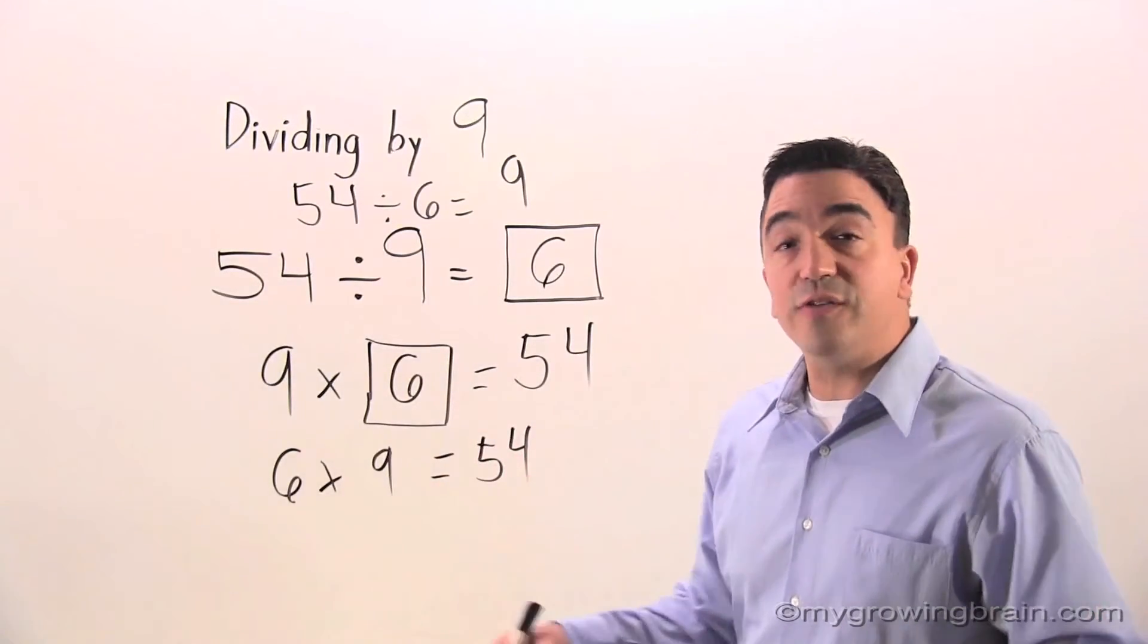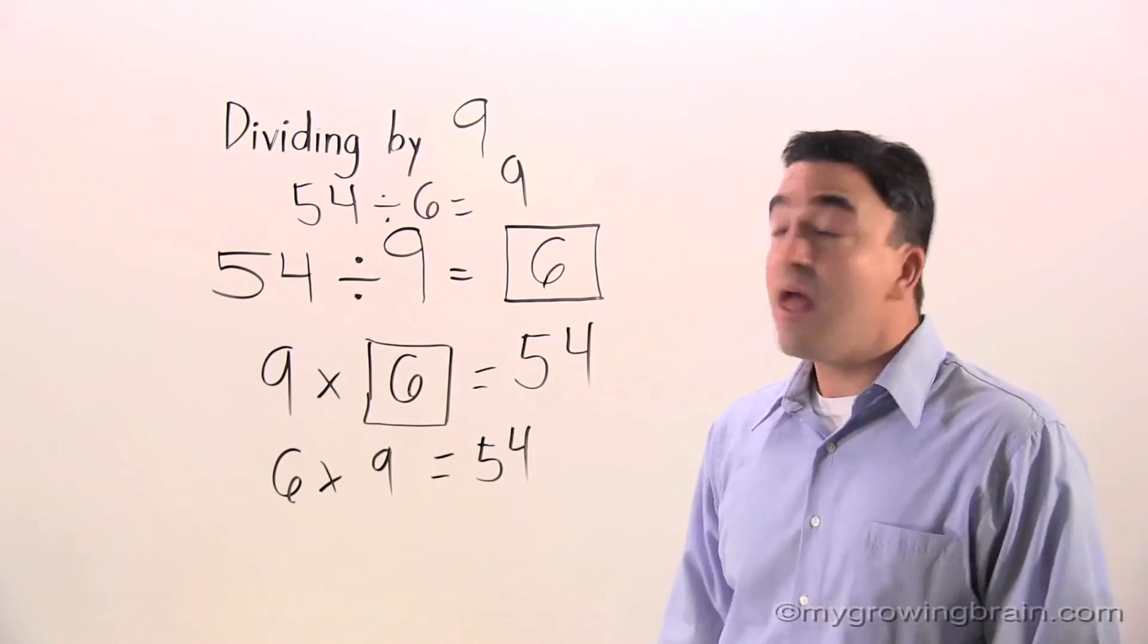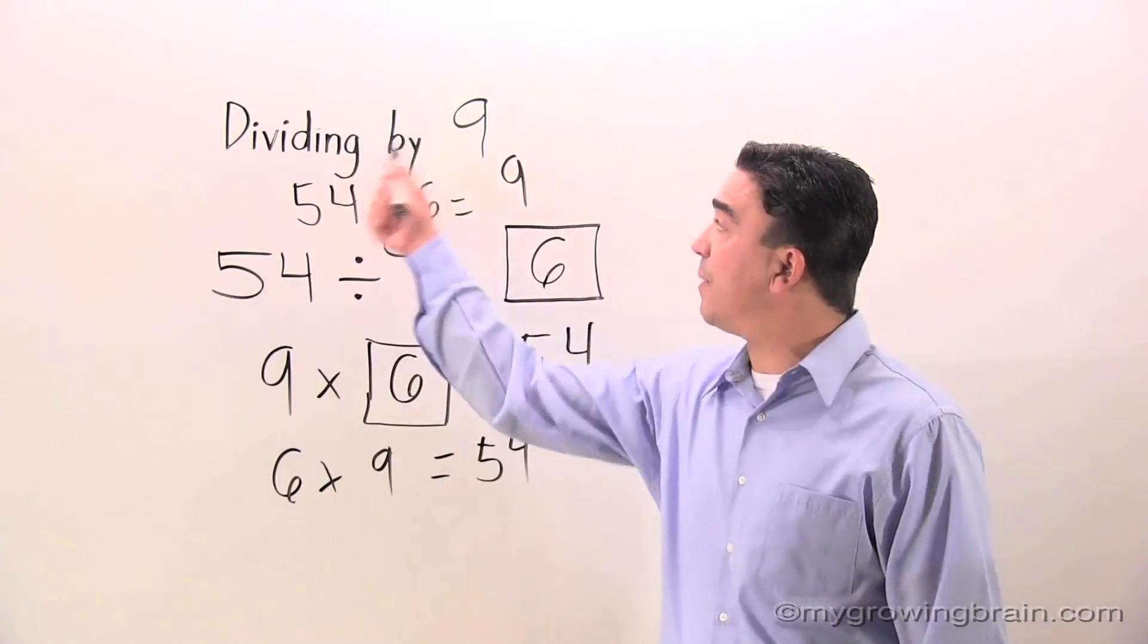Now using all these strategies helps us understand that 54 divided by 9 is equal to 6. That concludes our lesson on dividing by 9.